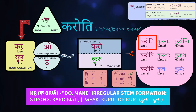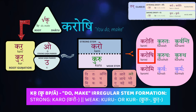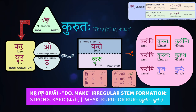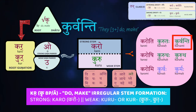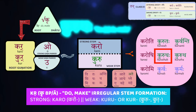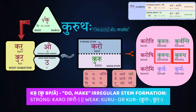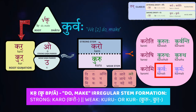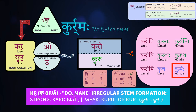So karo and kuru. For the strong forms, we'll have karoti — he/she/it does or makes. Karoshi — you do or make, as sandhi is in effect. And karomi — I do or make. In the weak forms, we use kuru now: kurutaha — the two of them do or make. In the plural, kuruwanti — they three or more do or make. For second person dual, kurutaha — the two of you do. For plural, kurutha — you plural do or make. In the uttama purusha duals and plurals, like the optional rule for tan, we see the u fall out, and here it is compulsory. So we get kuruwaha — we two do or make, and kurmaha — we three or more make or do.